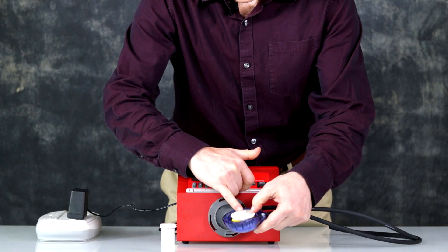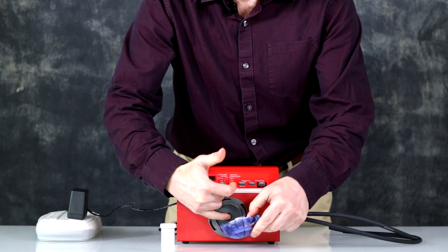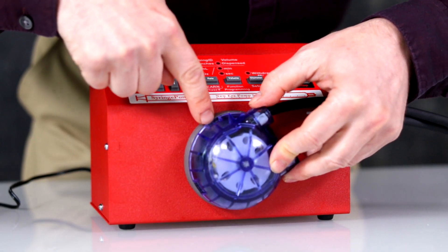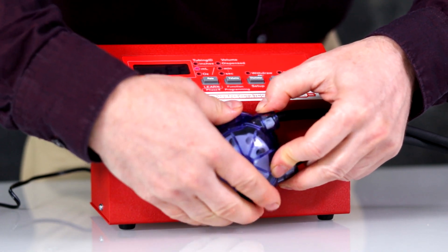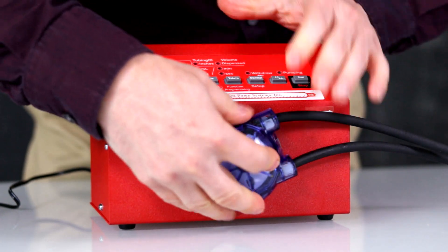Match the two slots on the head to the two slots on the motor. Rotate the head, aligning the tabs on the head and base. Press and turn to lock into place.